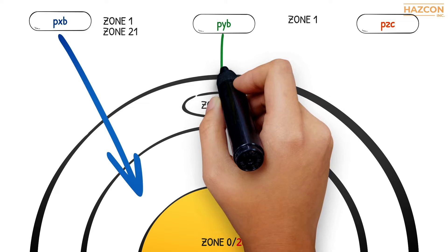Protection by pressurization is subdivided in the standard into three levels of protection called PXB, PYB, and PZC. PXB enables uncertified equipment to be installed in a Zone 1 or Zone 21 location. PYB enables equipment suitable for Zone 2 to be installed in a Zone 1 gas explosive area.